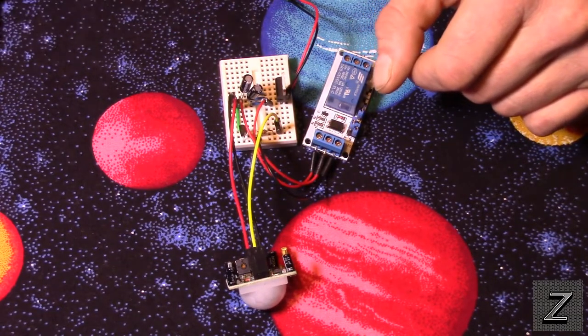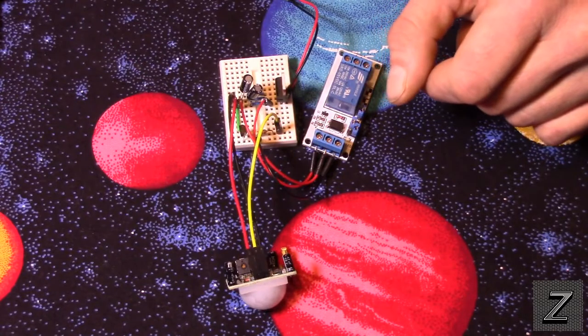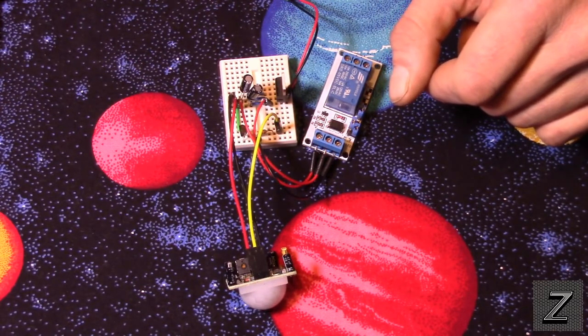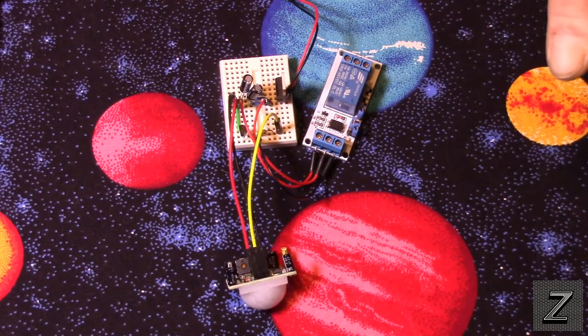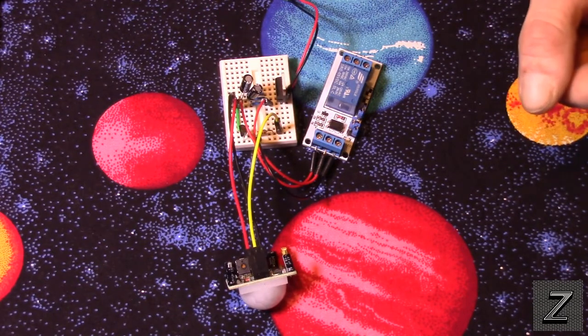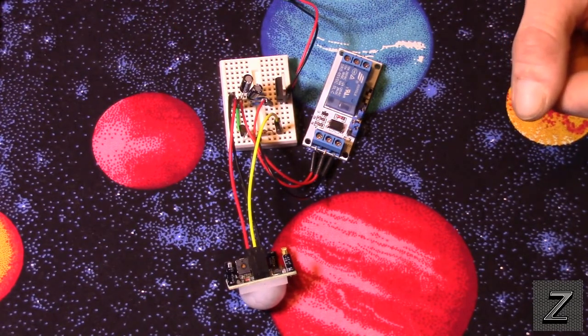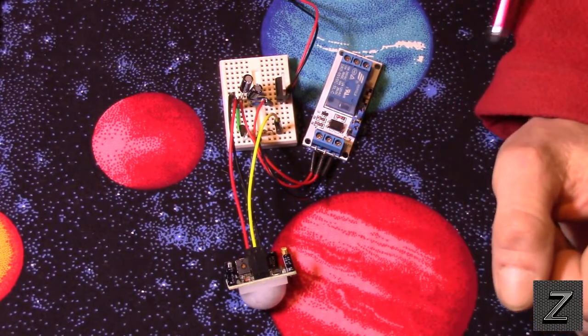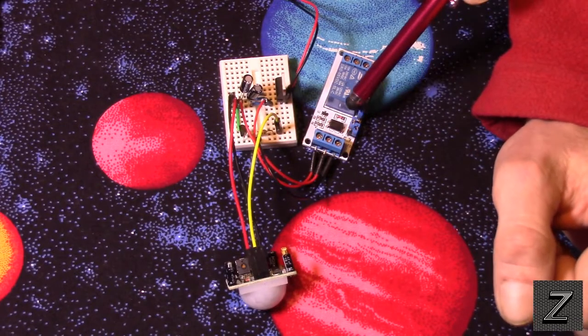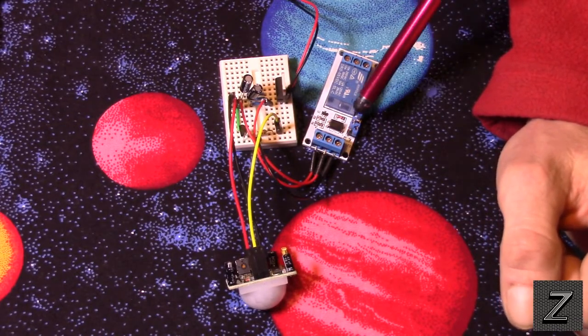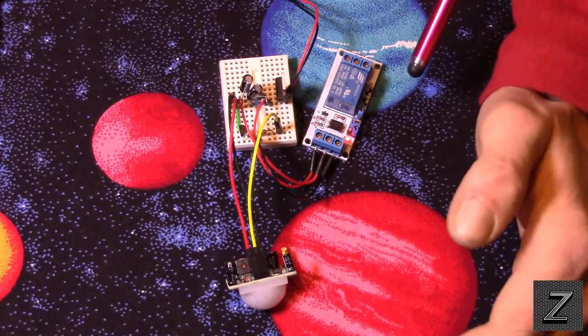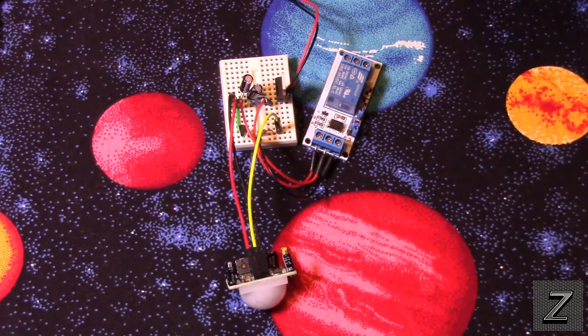So, what we have here is we've got the PIR sensor, and we've got the relay, and then we've got some components here. So, first, let me just demonstrate it working quick, and then we'll go over what components we have here and how to set this up. So, if I put my hand in front of it, there's a little LED right here on the relay. I don't know if you can hear it clicking on or off. There it goes again, because I have my hand up there by it.